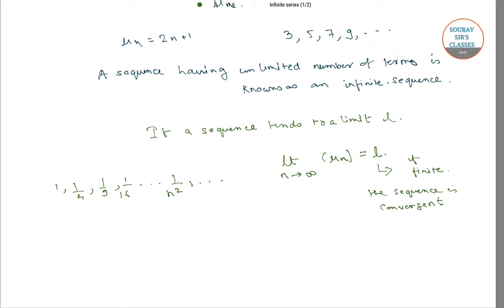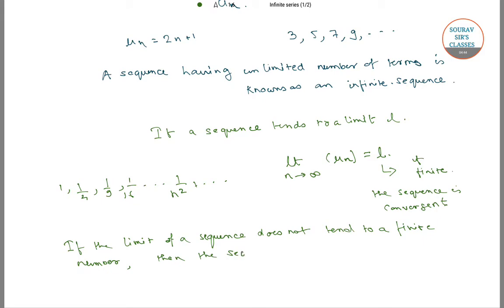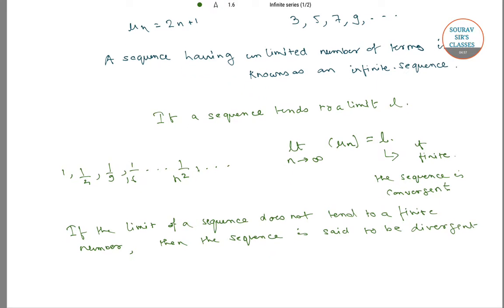If the limit of a sequence does not tend to a finite number, then the sequence is said to be divergent. For example, 3, 5, 7, and so on — that is, 2n plus 1 and so on. The limit of this sequence does not tend to a finite number, so this is a divergent sequence.